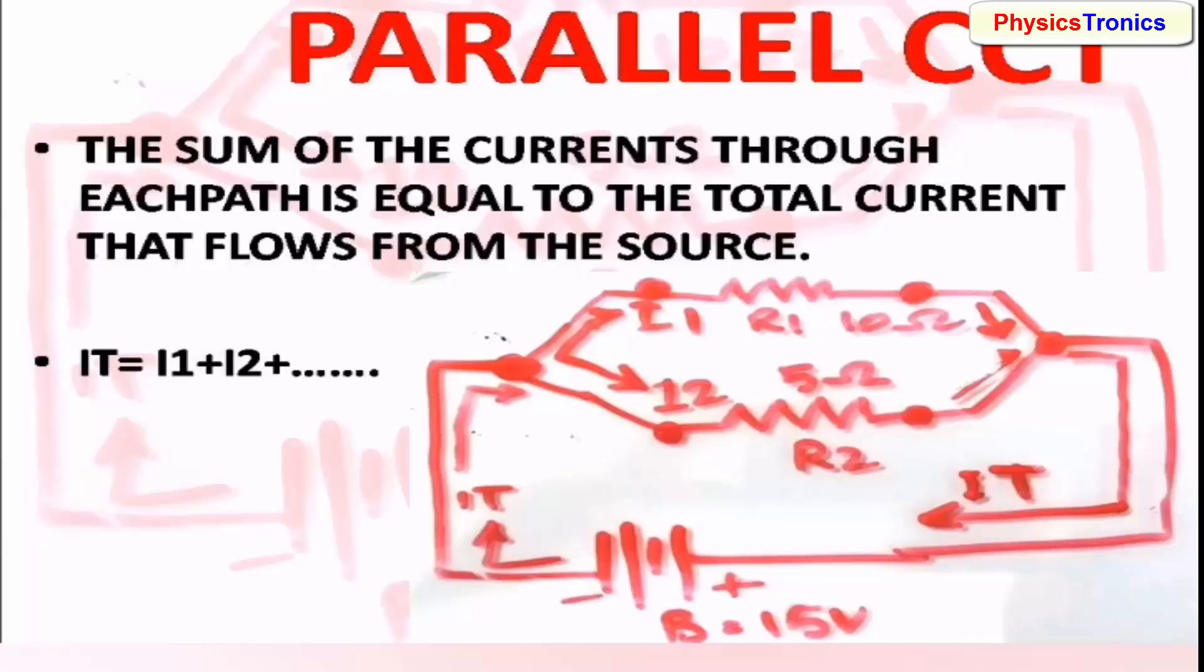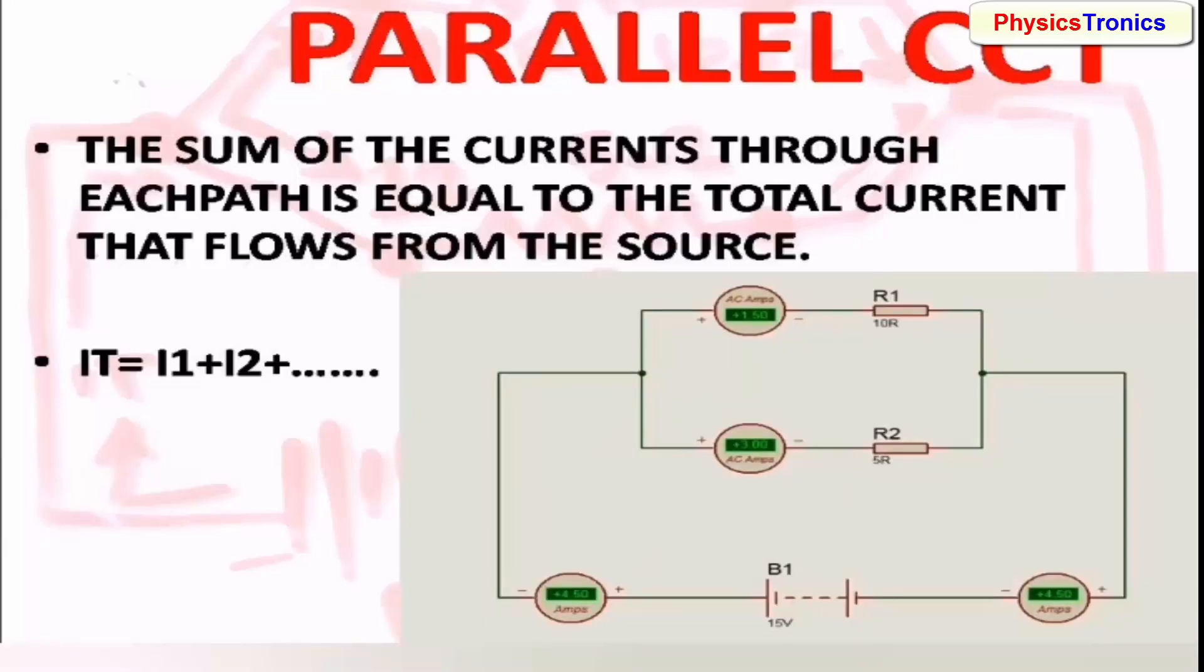The total current of the circuit will be equal to the sum of every branch current flowing in parallel in the circuit.